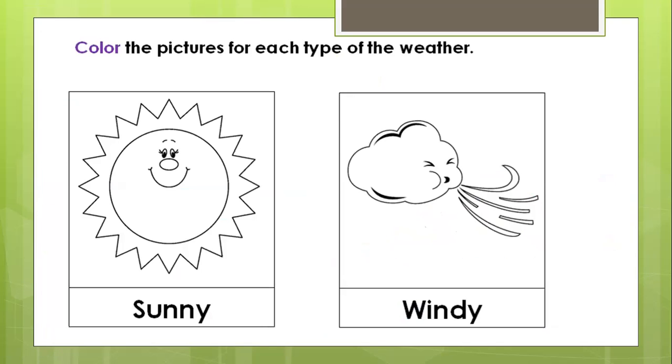Let's come to our worksheet today. It says color the pictures for each type of the weather. Can we color the sun? It is sunny. Can you say it's sunny? Yeah, it's sunny weather.